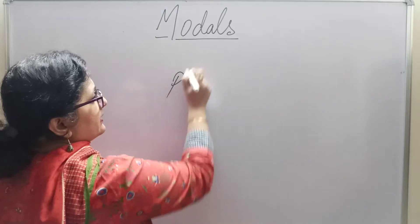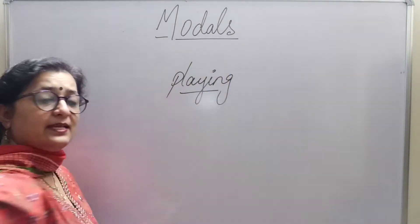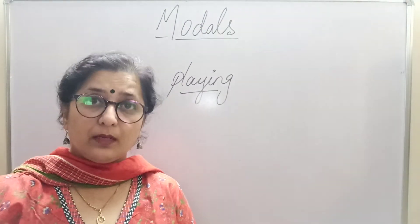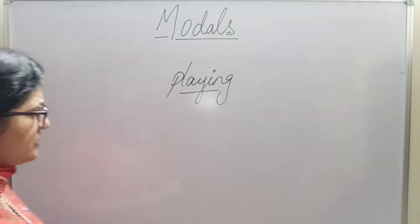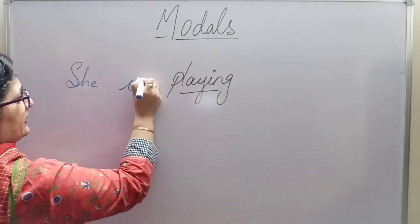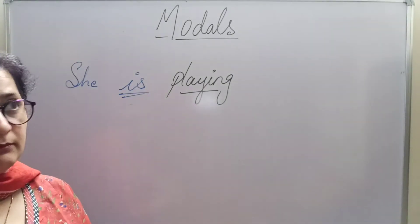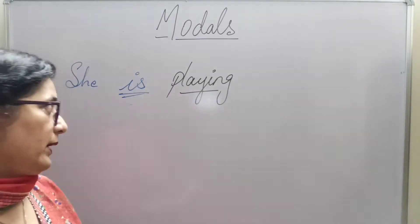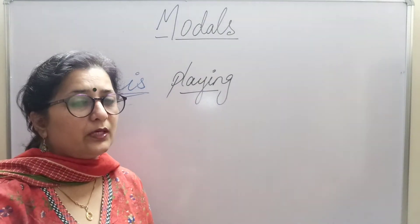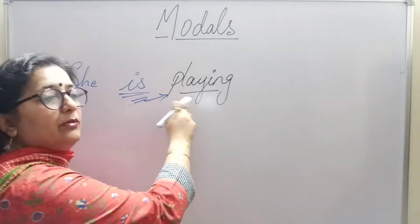Suppose I give you the word 'playing' — this is which part of speech? Well, it is a verb. Now suppose I add up a sentence to that: 'She is playing.' You will say 'is' is a helping verb, an auxiliary verb. Absolutely right — this is called an auxiliary verb or a helping verb. 'Is' is helping the verb 'playing.'